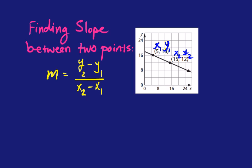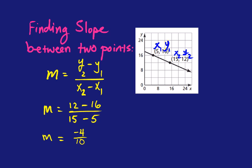In the formula, m equals y2, which is 12, minus y1, which is 16, divided by x2, which is 15, minus x1, which is 5. Following the formula: the slope equals negative 4 over 10, because 15 minus 5 is 10. Reducing that gives a slope of negative 2/5.